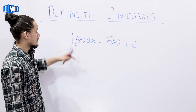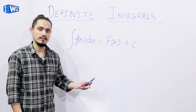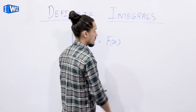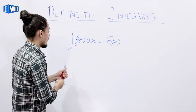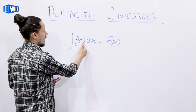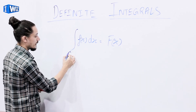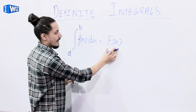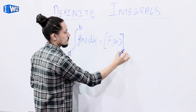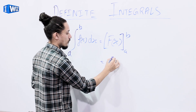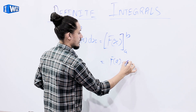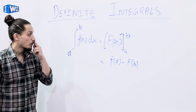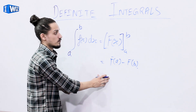As the name suggests, definite integrals are the integrals which have a unique value. Since they have a unique value, we don't use a constant of integration in the case of definite integrals. They are written as the integral of f of x dx from a to b, which equals F(b) minus F(a). This is how you write a definite integral. To further understand it, let's use an example.